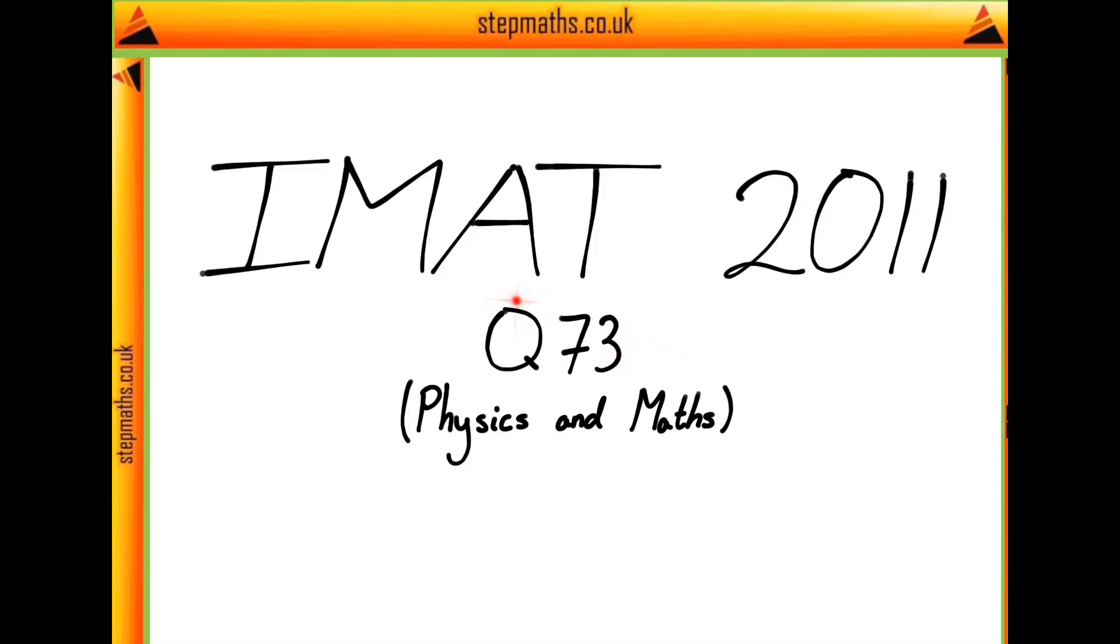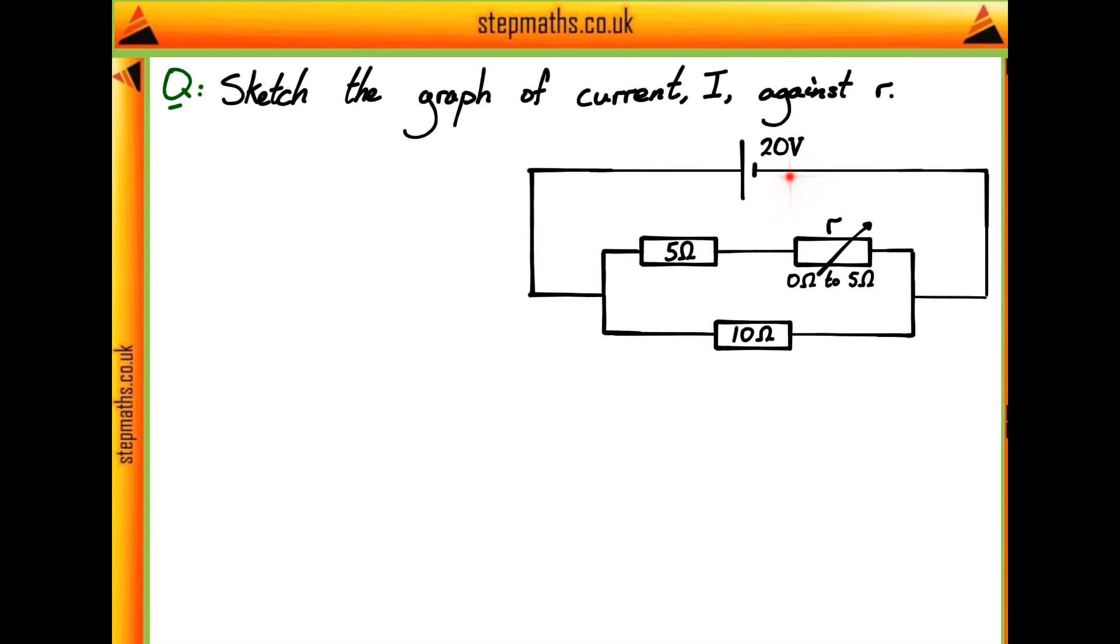Here we're going to look at question 73 from the IMAX 2011 paper. In this question we're given the following circuit which has a 20 volt battery connected to three resistors: a 5 ohm resistor, a 10 ohm resistor, and a variable resistor with resistance R which can go between 0 and 5 ohms.